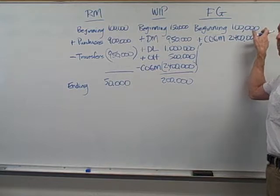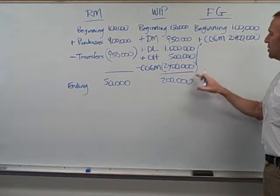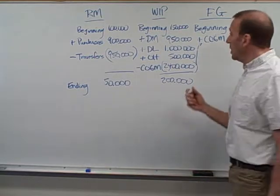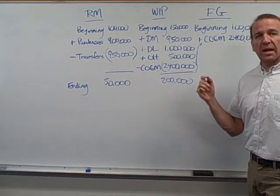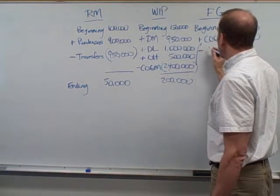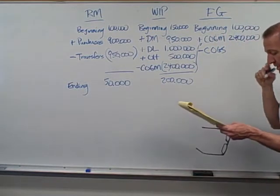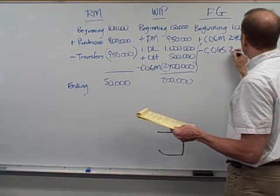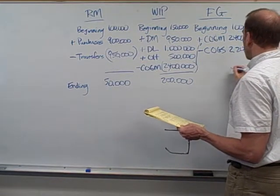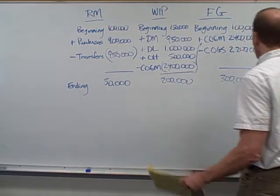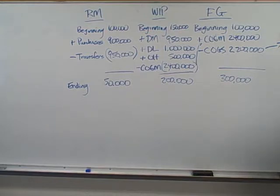Now we've got our beginning finished goods of $100,000. We just transferred in costs from work in process, our costs of goods manufactured, of tables that are finished. Now, what happens to these costs? Do they get transferred out? Of course they do eventually, once they're sold, right? And then they become costs of goods sold. And let's say our cost of goods sold is $2,200,000, 2.2 million. So then our ending balance would be $300,000. And then I like to just put a little arrow here for cost of goods sold, because that's a separate account of $2.2 million.